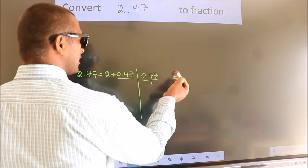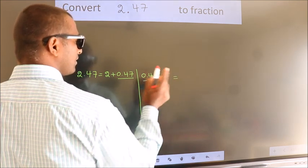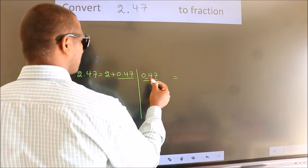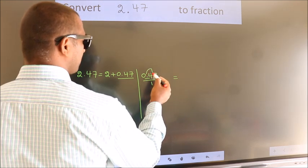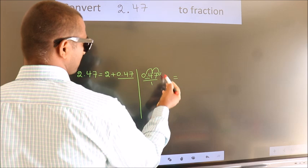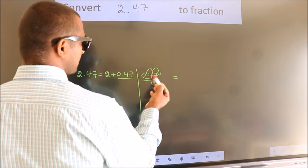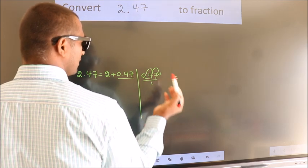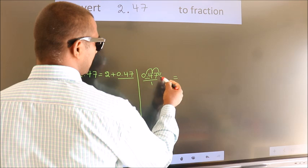To convert this to fraction, we have to move this decimal after 1, 2 numbers. To move this decimal after 2 numbers, for that multiply it with 100.